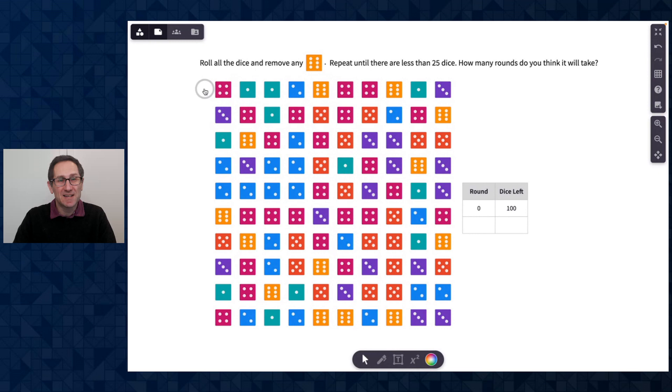In this task I'm going to roll all the dice and remove any sixes, and keep doing it until there are less than 25 dice. I might ask my students to predict how many rounds they think this will take. I'm going to share a number of ways and ideas to use this Polypad. Obviously you can adapt this and scaffold it up or down depending on the entry point of your students.